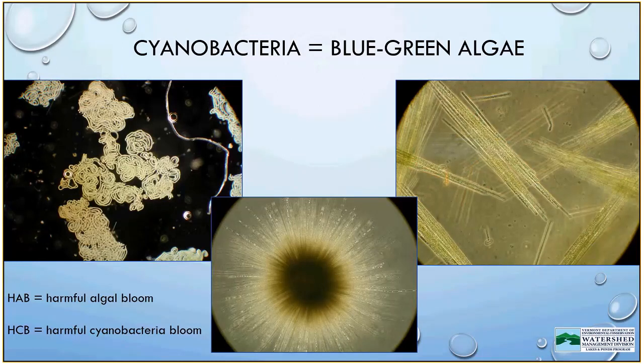Cyanobacteria is a name for a photosynthetic organism that's commonly found in our lakes, ponds, rivers, and streams in Vermont. You may recognize it by another name — they were also called blue-green algae. Cyanobacteria, however, is the more scientifically accurate name, and it's the one I'll be using throughout the presentation. Large masses of cyanobacteria that either discolor the water or form surface scums are known as harmful algal blooms, or sometimes harmful cyanobacteria blooms.